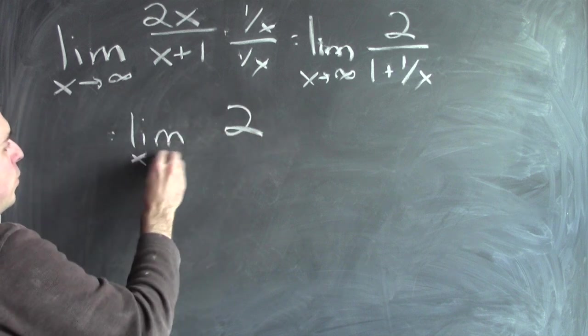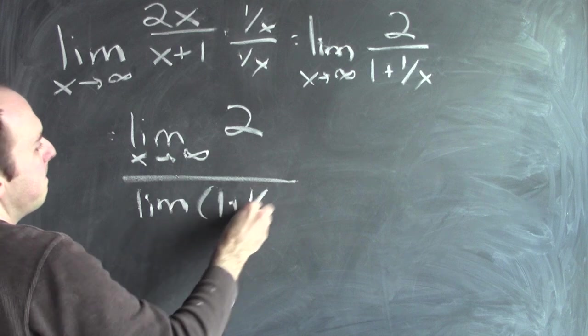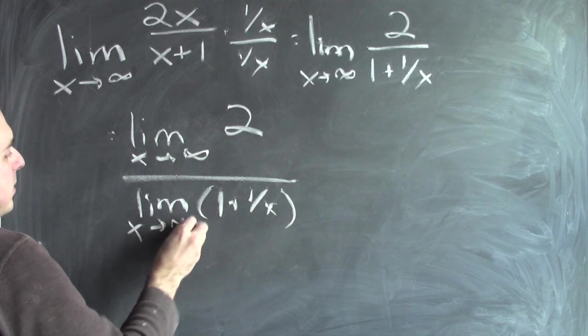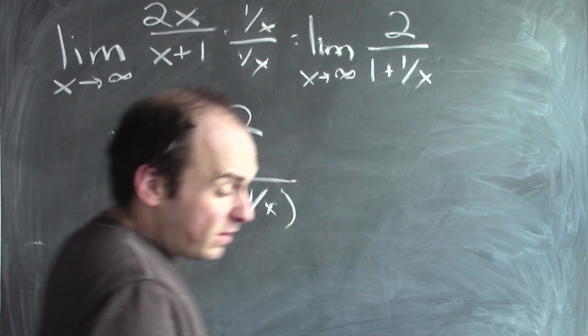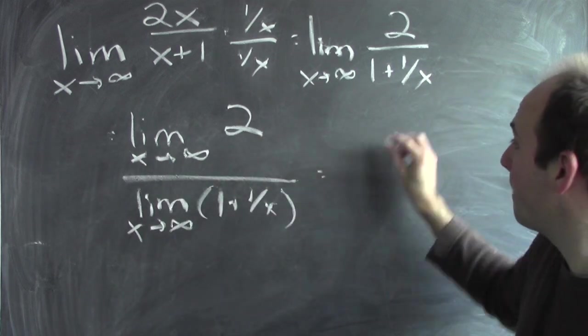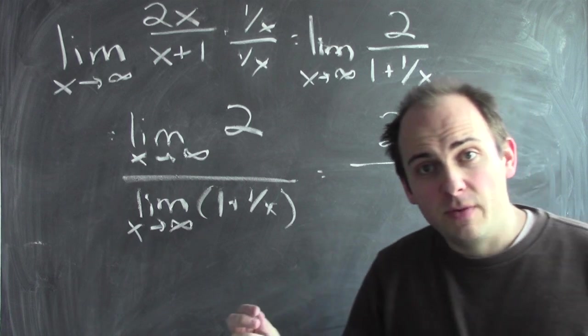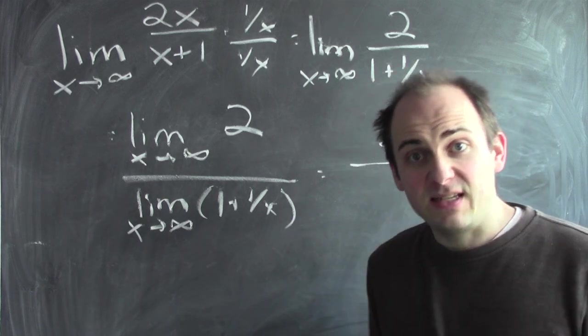The limit of 2, the numerator, divided by the limit of the denominator as x approaches infinity. The limit of the numerator is just the limit of a constant, which is 2. The limit of the denominator is the limit of a sum, which is the sum of the limits, provided the limits exist. And they do.